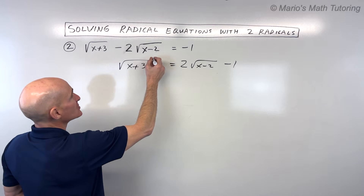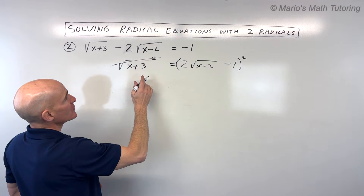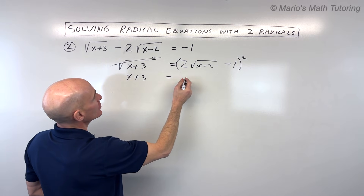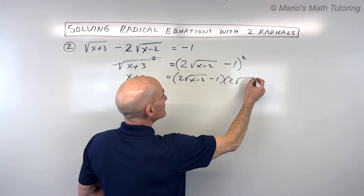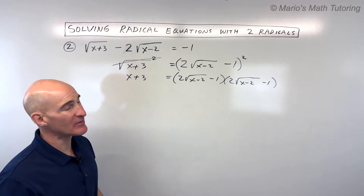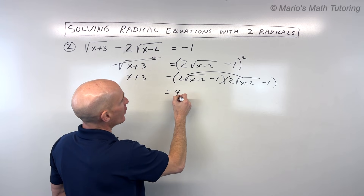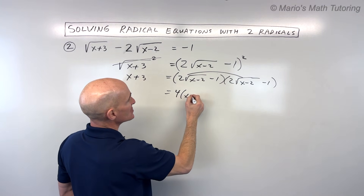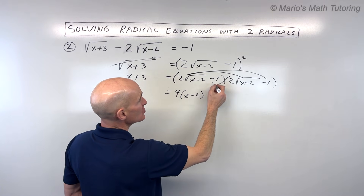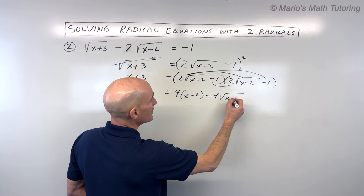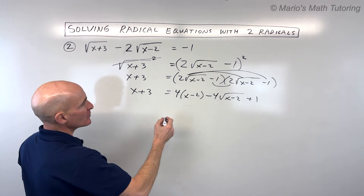Step two: square both sides to eliminate the radical. The left side gives us x plus three. On the right we have a binomial squared, so we need to FOIL it out. Two times the square root of x minus two, times itself, gives four times x minus two. The outer and inner terms each give negative two times the square root of x minus two, combining to negative four times the square root of x minus two. And negative one times negative one is positive one.